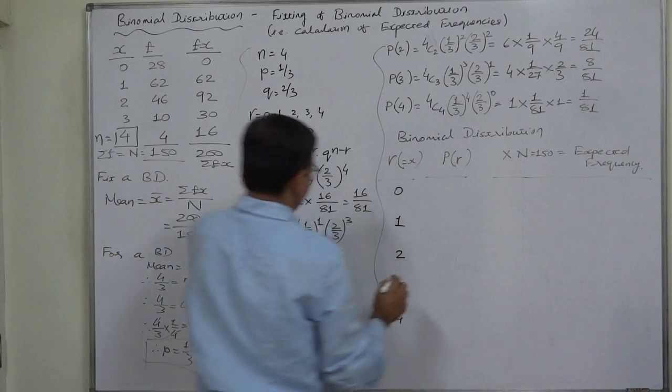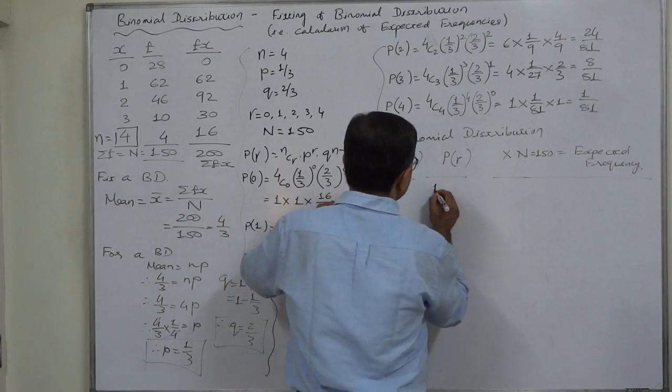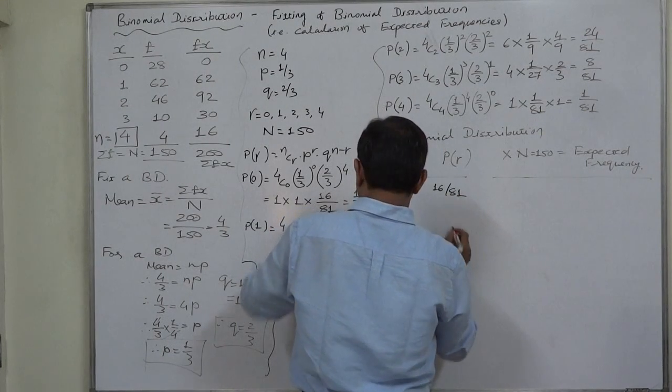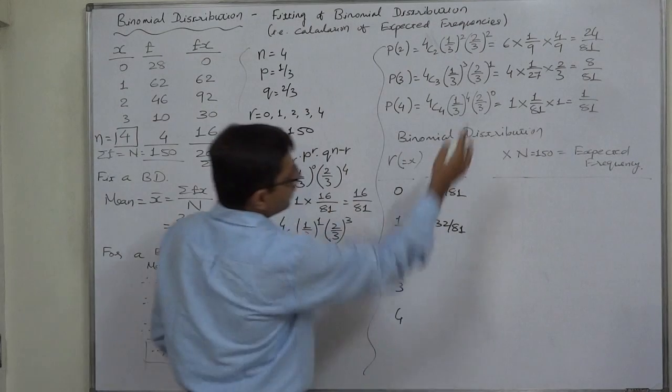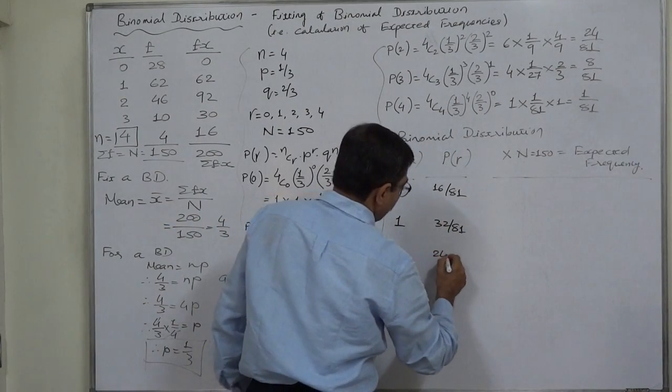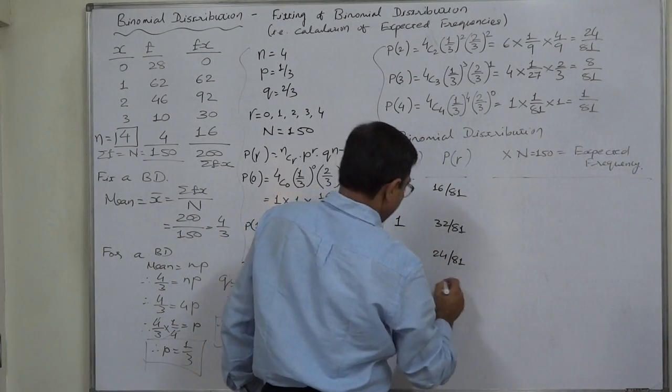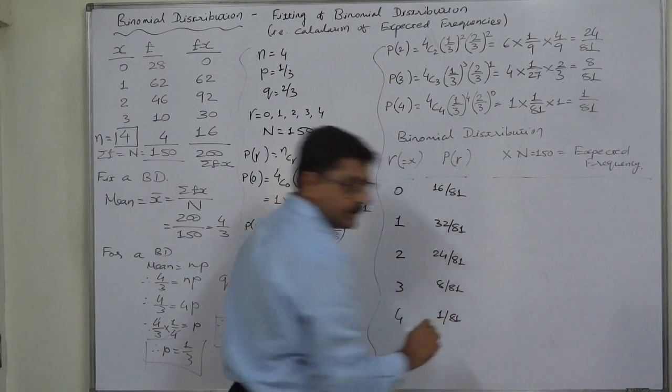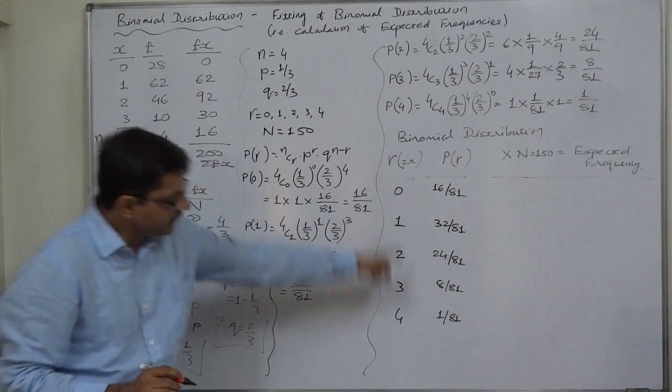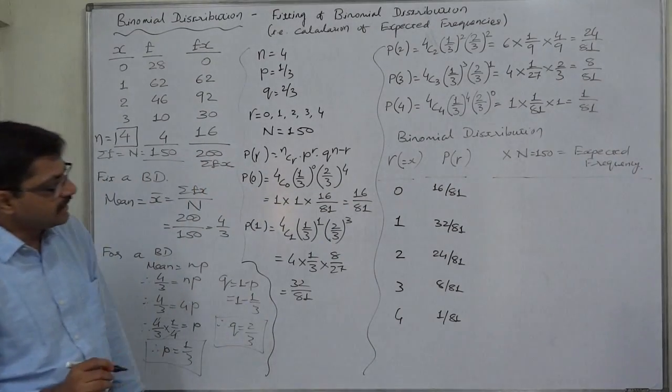Probabilities are respectively 16 by 81, 32 by 81 as we already calculated, 24 by 81, 8 by 81, and 1 by 81. Now, multiply these probabilities by capital N, that is 150.